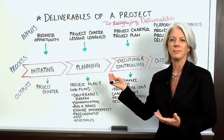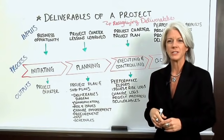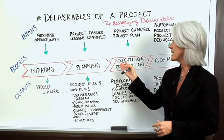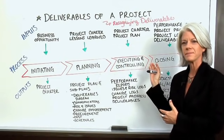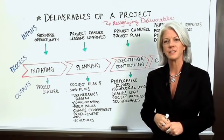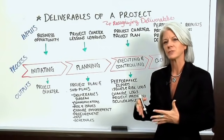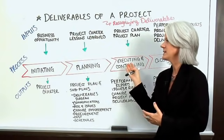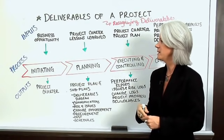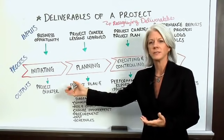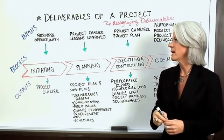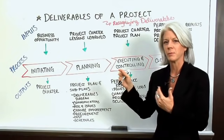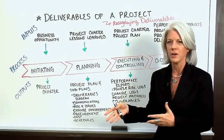I'm sure this looks familiar — the actual project lifecycle: initiating, planning, executing, controlling, and closing. One of the most important things to know is the actual deliverables that are required to come into this process and the critical deliverables coming out. Today we're going to talk about the deliverables for each phase, the inputs, the outputs, and how valuable they are.